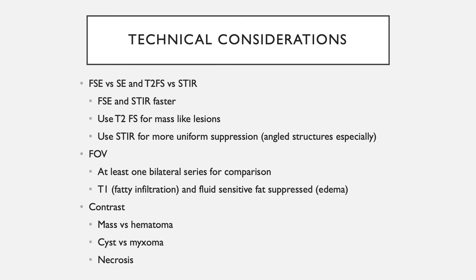A few technical considerations to keep in mind. We can do fast spin echo versus spin echo sequences, and T2 fat suppressed versus STIR images. The fast spin echo and STIR images are faster. The T2 fat suppressed images should be used for mass-like lesions, and STIR images are preferable when looking at angled structures such as the bent elbow or the ankle, because you get more uniform fat suppression.